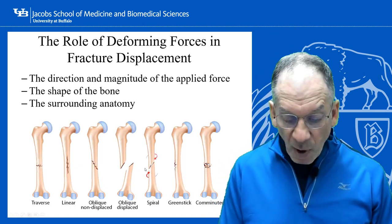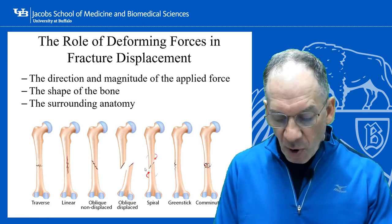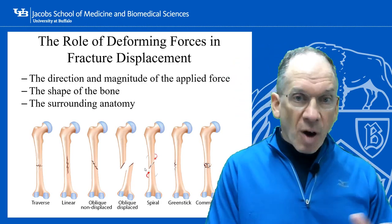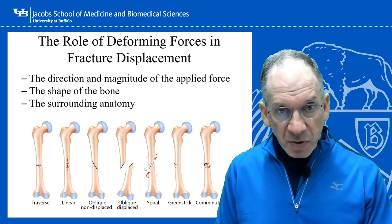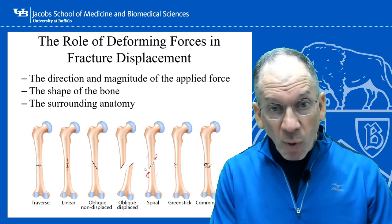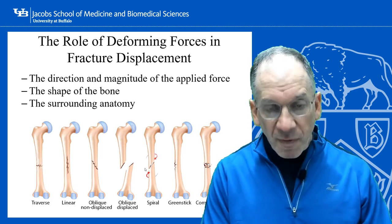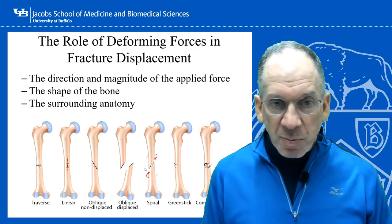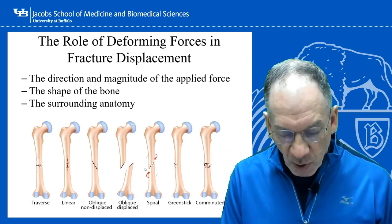Magnitude of force also matters. If the bone is broken into two pieces that implies less force; broken into many pieces implies more force. Host factors are important too: a 25-year-old with a comminuted distal radius fracture implies significant force, whereas a 75-year-old can sustain the same fracture pattern from a simple fall from standing height. Host factors and bone condition play a big role in fracture pattern.